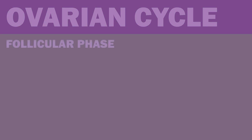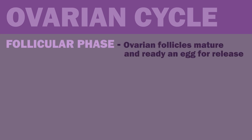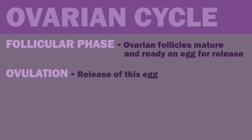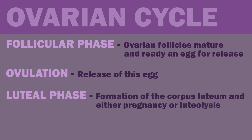During the follicular phase, ovarian follicles mature and ready an egg for release. Ovulation is the release of this egg. Finally, the luteal phase involves the formation of the corpus luteum and either pregnancy or luteolysis, the degradation of the corpus luteum.